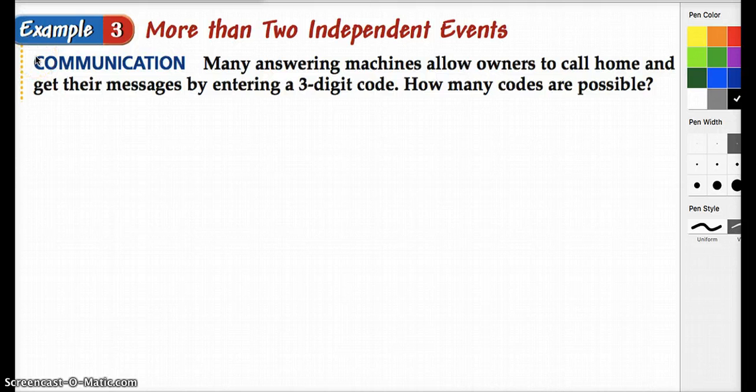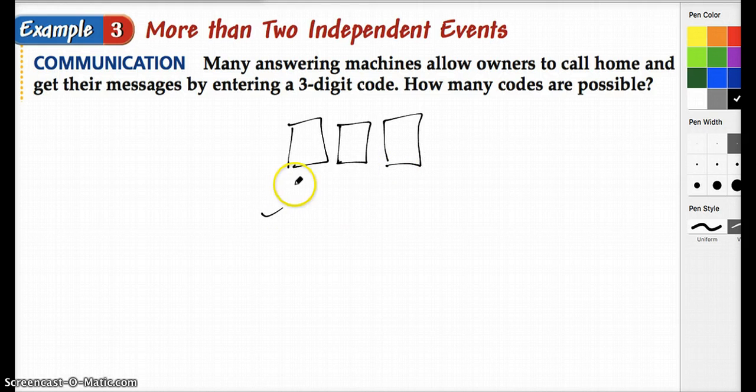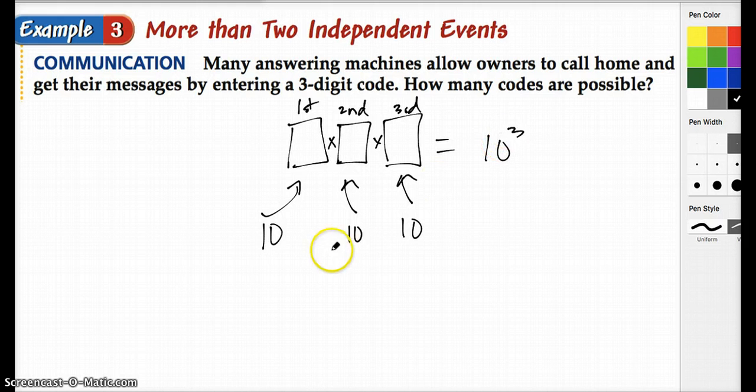So here we're looking at a similar situation, but we're talking about numbers. Many answering machines allow owners to call home and get their message by entering a three-digit code. How many codes are possible? And so if we're talking about three digits, we think about all the possible digits that can go into each code. And we know that there are 10 digits from zero to nine. And so for each number, the first, second, and third number, there are 10 different choices. And therefore, since there's 10 different choices for each, it becomes 10 to the third power, 10 times 10 times 10, or 1,000. So there's 1,000 different possible codes that you could have for an answering machine.